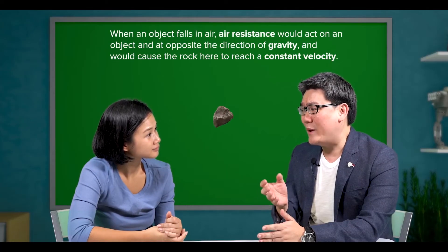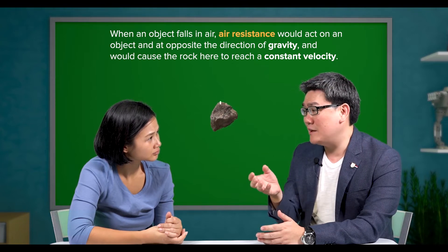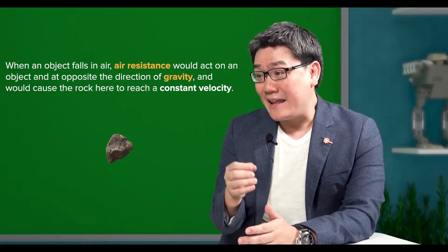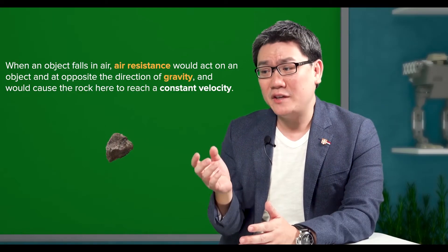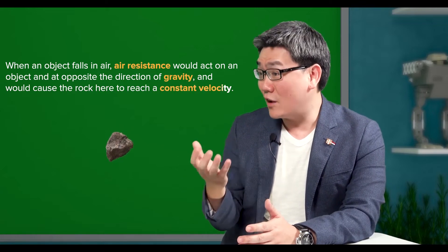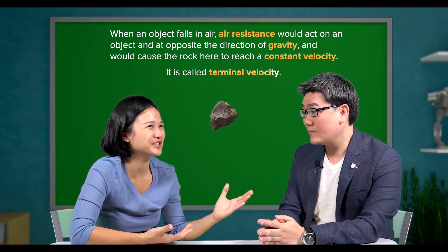Do you remember when an object falls in air? Air resistance would act on the object in the opposite direction of gravity. And air resistance can cause the rock here to reach a constant velocity? Yes, I remember that it is called terminal velocity.